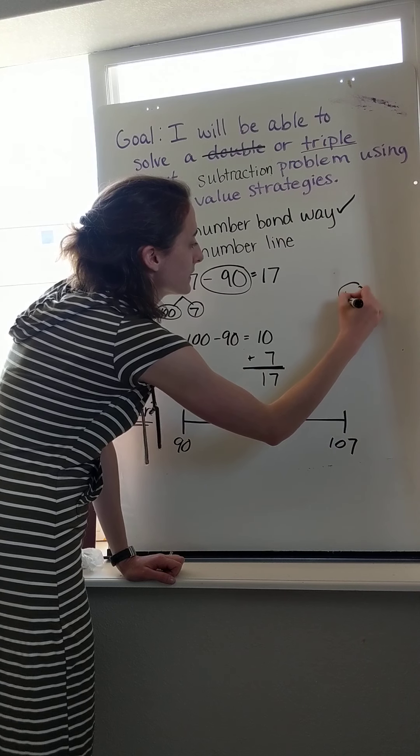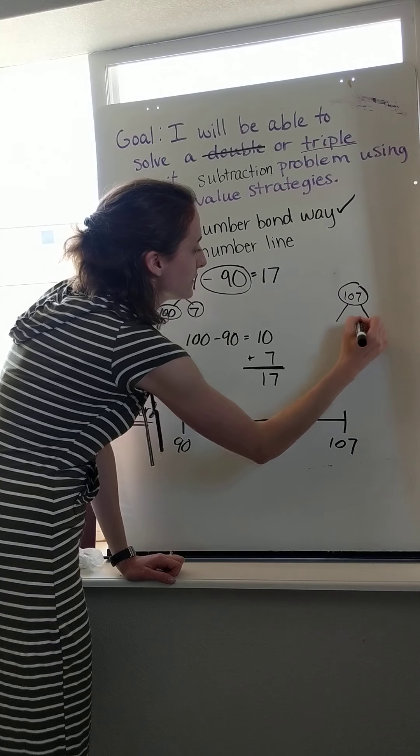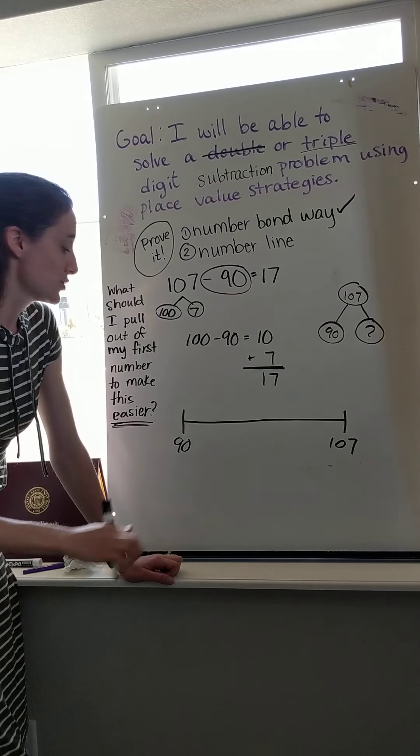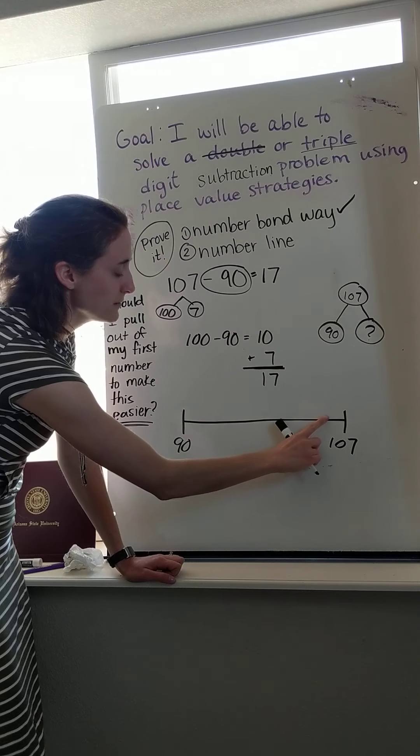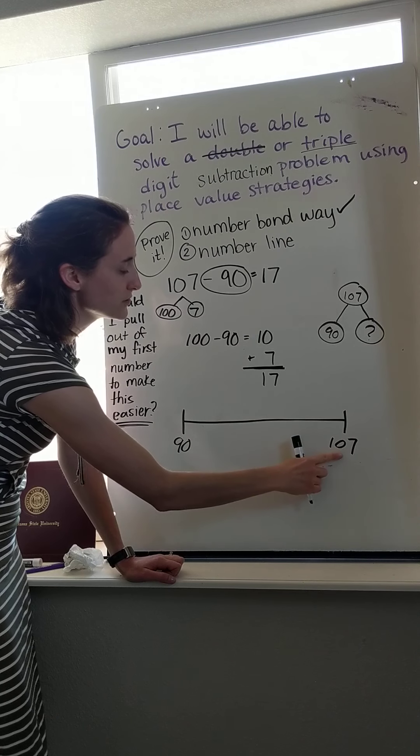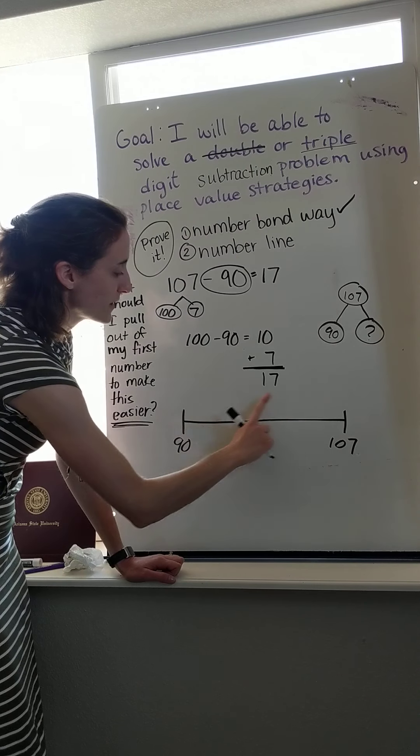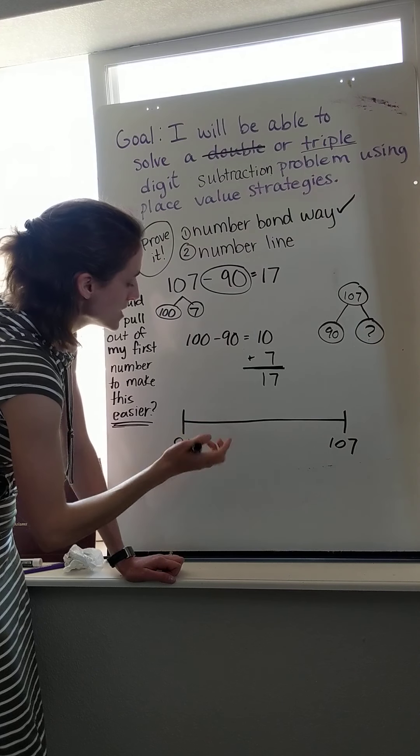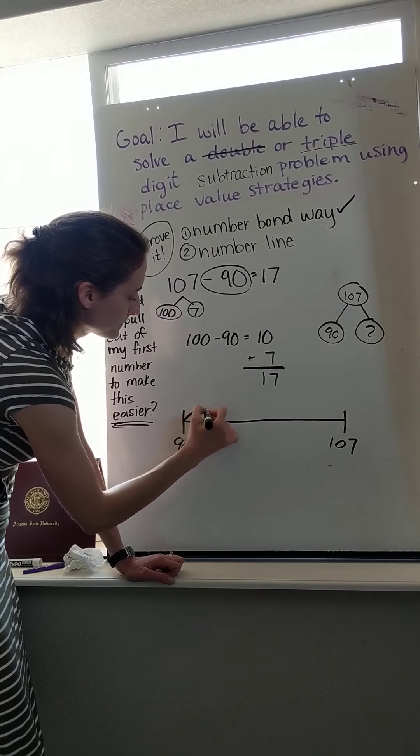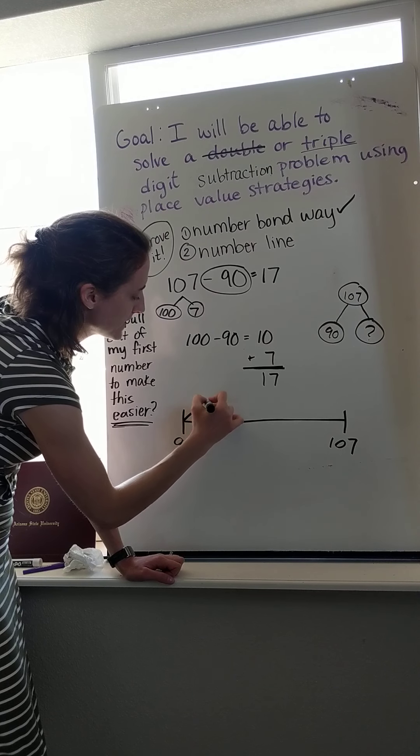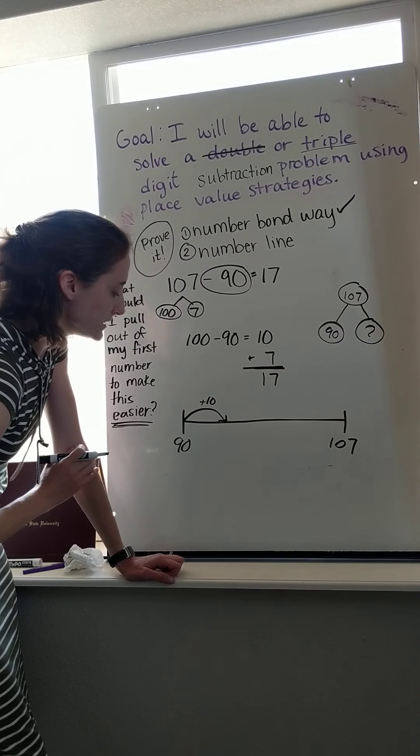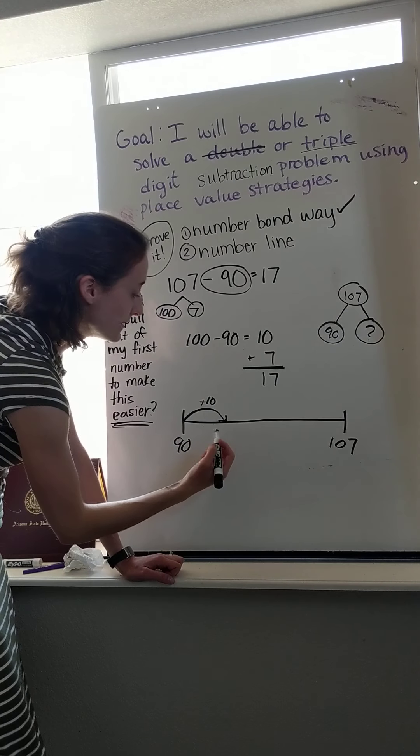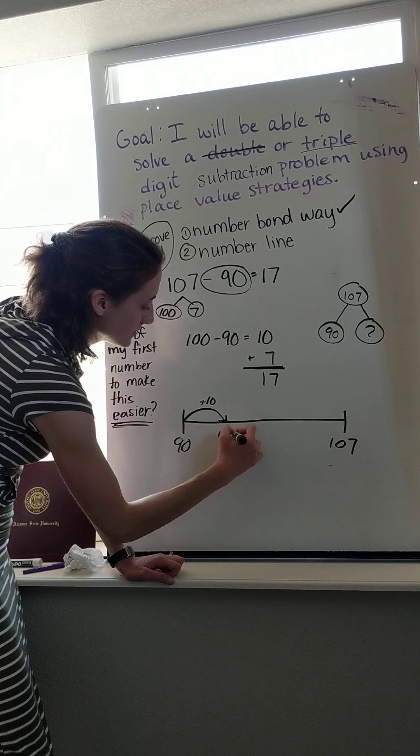Because this is like the whole is 107. The part I know is 90. What is the missing part? So if I say 90 plus something makes 107, the answer for my difference, subtraction is finding the difference, is going to be in my jumps. So I go 90 plus 10 more. I did that because I know 90 and 10 more makes 100. And I'm trying to get to 107. So I'm going to get to 100 first.